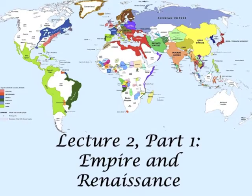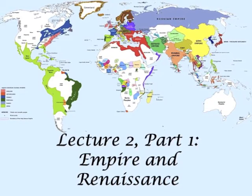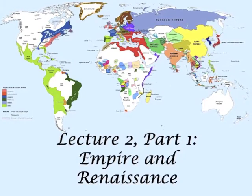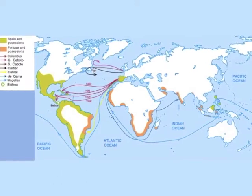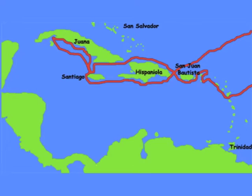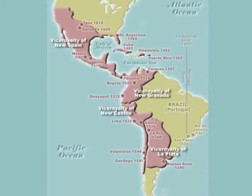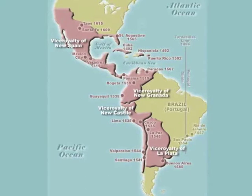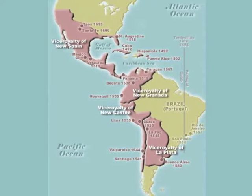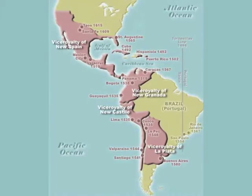Greetings, all, and welcome to Lecture 2, Part 1. In Lecture 1, we saw how a complex mix of factors had ended the medieval period and ushered in the early modern era. The Age of Discovery, which included the discovery of the American continents by Europeans, the circumnavigation of the globe, and the establishment of colonies around the world by Europeans, had extreme and far-reaching consequences, such as the globalization of empire and social revolutions caused by new technologies and ideas.